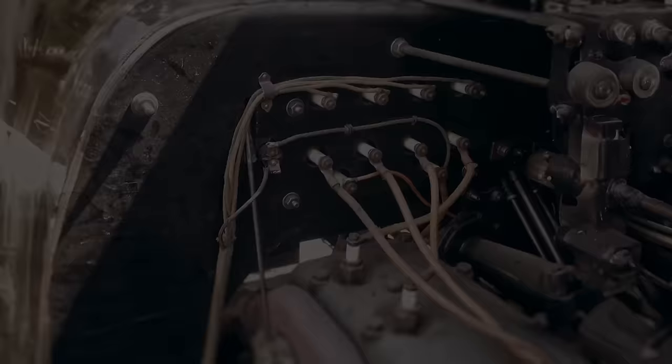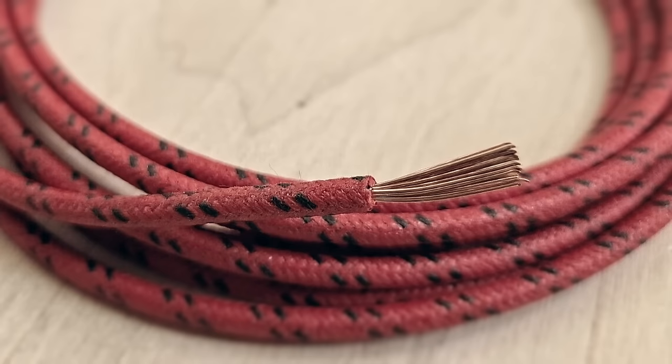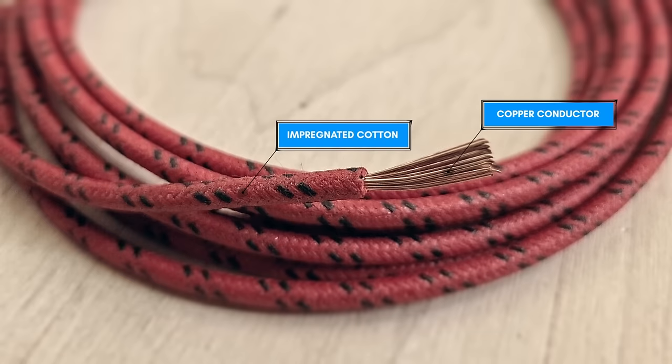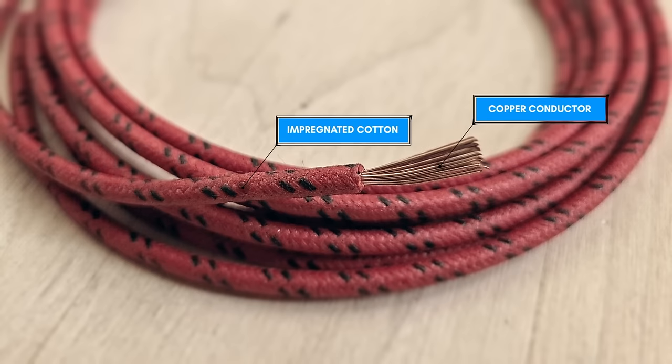Early automobiles, including the Ford Model T, used cloth-covered wire. This type of wire consists of a copper conductor insulated with a layer of cloth material. The cloth insulation was typically made from cotton or a similar fibrous material and impregnated with a varnish or rubber to provide additional protection against moisture and wear.